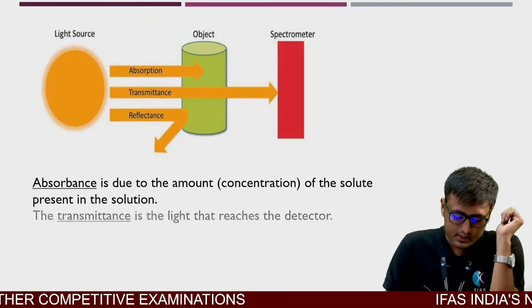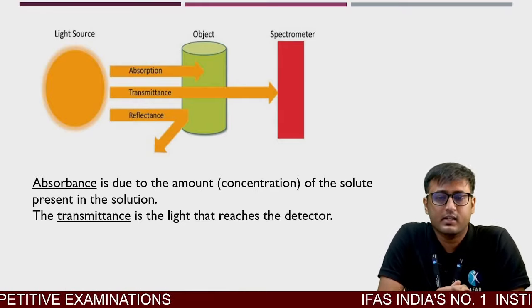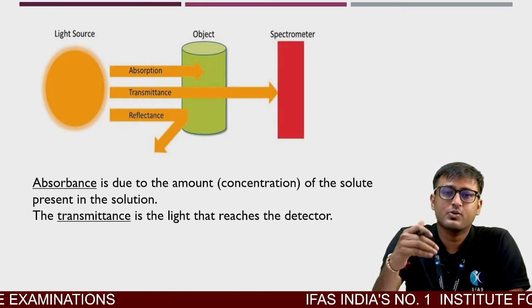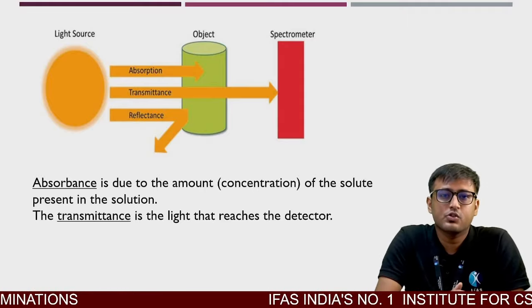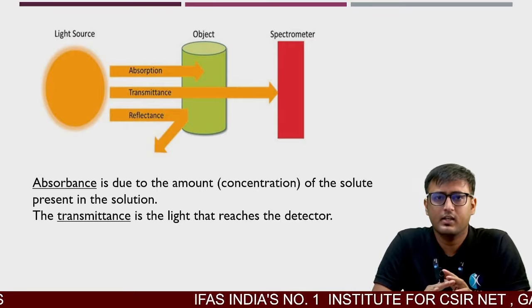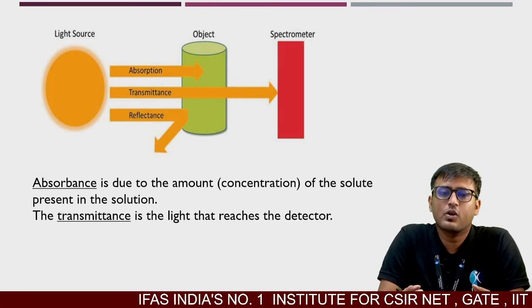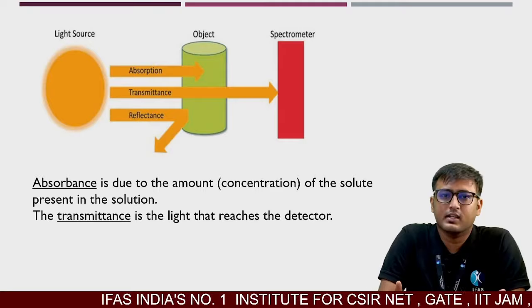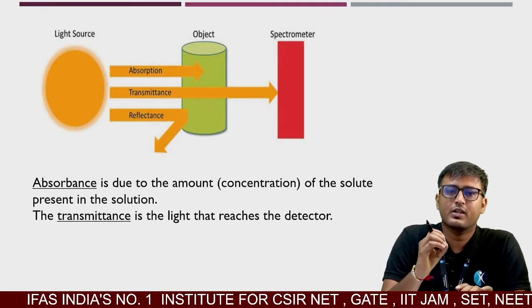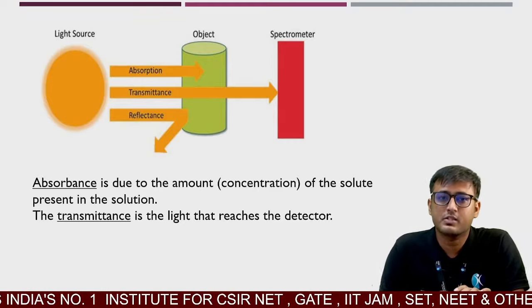Transmittance is the light that reaches the detector. Transmittance aisi particular light hai jo detector tak pahunchti hai — jo absorb nahi hui hai, detector tak pahunch gayi hai. Agar koi bhi light detector tak nahi pahunchti hai, toh woh humein black dikhta, but aisa nahi hai — kuch na kuch particular color ya light intensity detector tak pahunchti hai, jisko hum transmittance bolte hain.